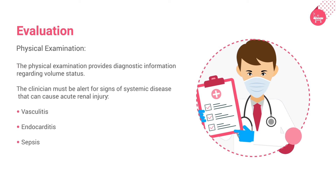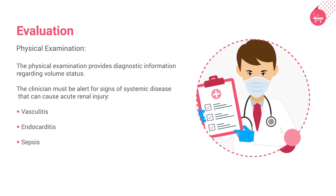The physical examination provides diagnostic information regarding volume status. Diminished skin turgor, sunken eyes, dry mucous membranes, the absence of axillary sweat, or orthostatic hypotension supports a diagnosis of prerenal azotemia. Hypertension in patients with AKI should raise suspicion of intrinsic renal disease. The treating doctor must be alert for signs of systemic disease that can cause acute renal injury, including vasculitis, endocarditis, and sepsis. Bladder distension and prostatic enlargement suggest an obstructive cause.